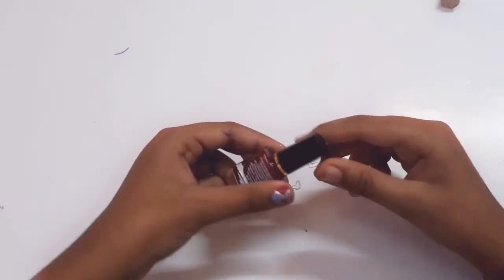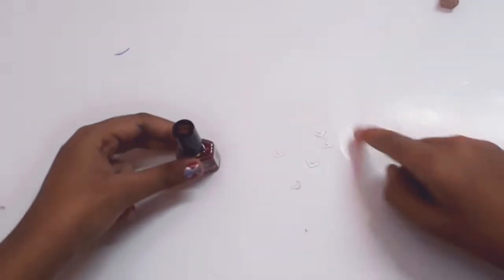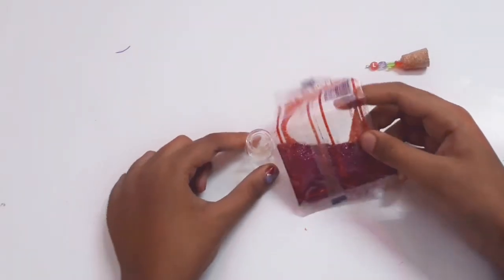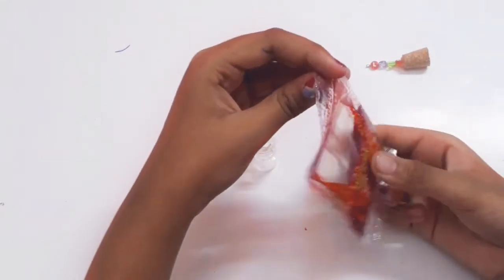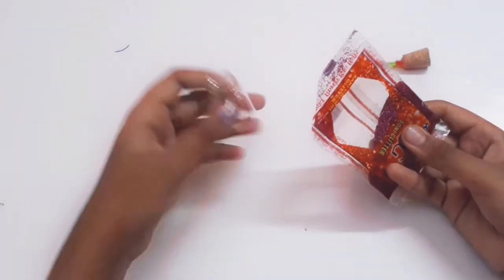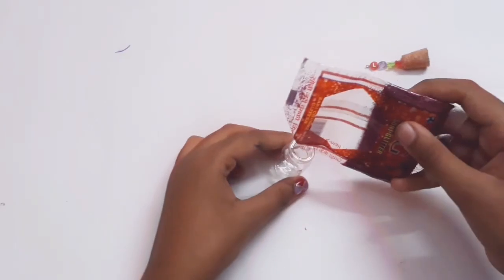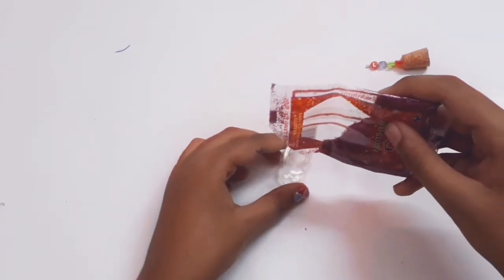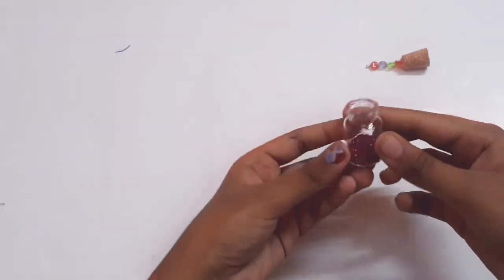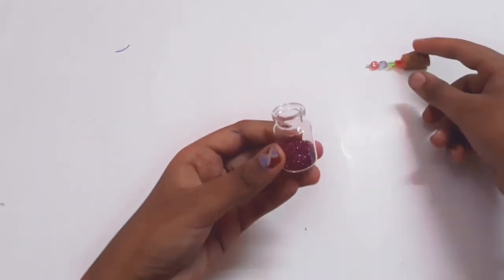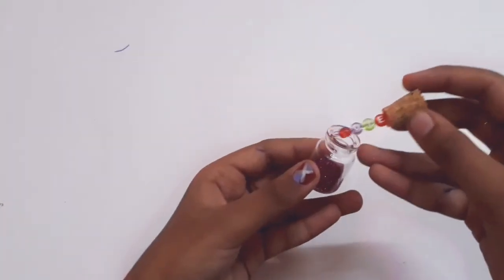Meanwhile, our glue gun hearts are dry, so let's paint them with nail polish. After doing so, I'm just going to fill the bottle a little bit with glitter. Oops, I think I put in more, but you make sure that you're going to put a little less glitter.